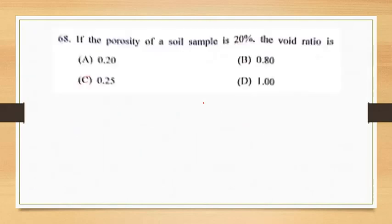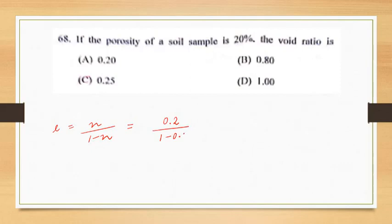The next question: if the porosity of a soil sample is 20 percent, the void ratio is — this is a simple question. We know that void ratio e = n / (1 − n), where n is the porosity. Here n = 20% = 0.2, so e = 0.2 / (1 − 0.2) = 0.2 / 0.8 = 0.25. So the answer is option C, that is 0.25.